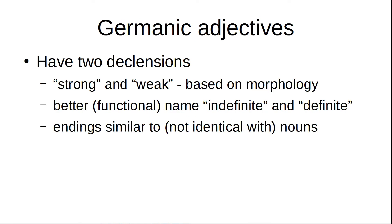Old English is a Germanic language, and Germanic adjectives are weird. They have two declensions — the strong and weak declensions, which is the traditional name. It's based on the endings; they're similar to, but not identical with, the strong and weak nouns. That's why they called them that — the Brothers Grimm and all that. But a better, more functional name is indefinite and definite.